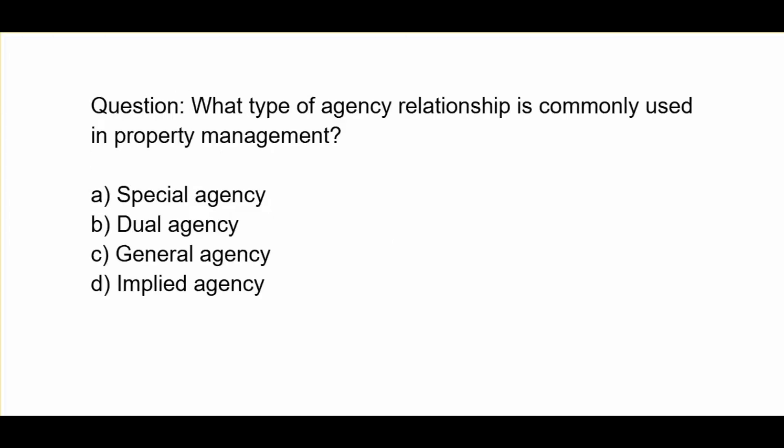What type of agency relationship is commonly used in property management? A. Special agency. B. Dual agency. C. General agency. D. Implied agency.